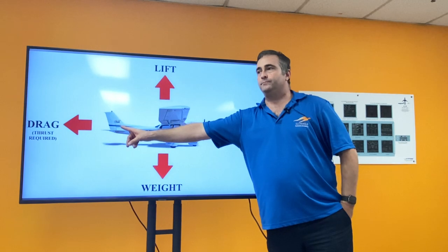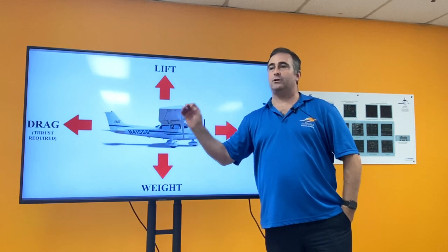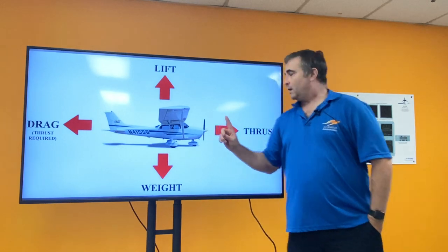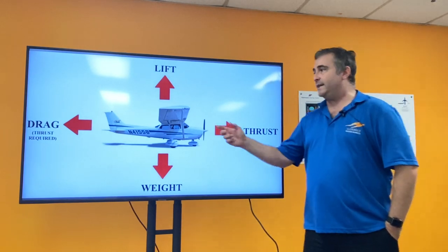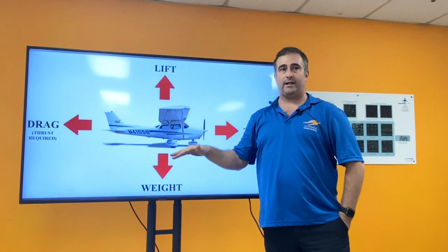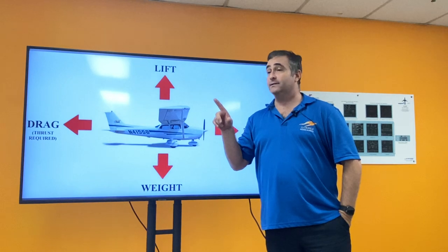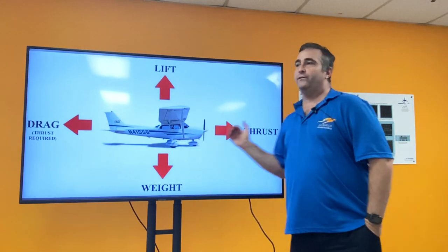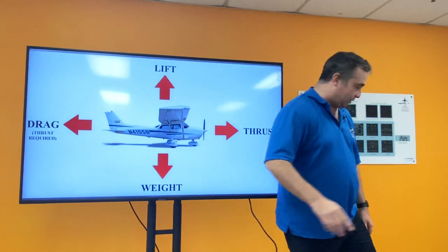That is also thrust required. So think about that for a moment because thrust required indicates that I may need a certain amount of thrust to overcome that drag. This becomes tremendously important when I remove thrust from the equation. When I have a power plant failure, now I need some sort of thrust required. Well, where am I going to get that? Maybe I have some potential energy that I can convert into kinetic.